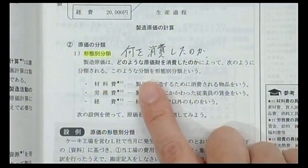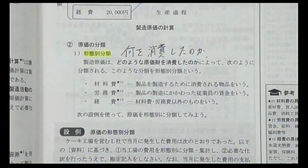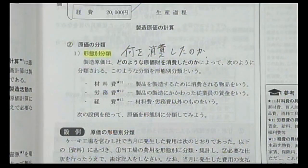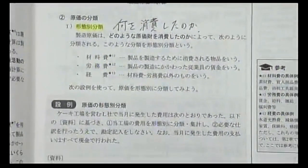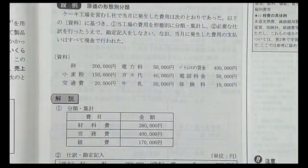形態別分類は何を使ったか（消費したか）という観点から行われる分類です。材料のような物を使ったら材料費、従業員の労働力を使ったら労務費、水道・ガス・電気などは経費です。原価の分類方法はこれだけではなく、形態別分類が最も基本的なものです。